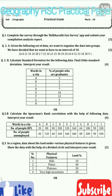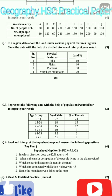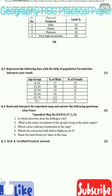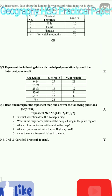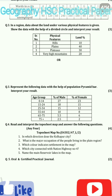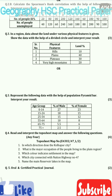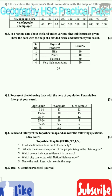Ab question 3 ki taraf aayenge. Question 3 mein aapko do sections hai — A aur B. Ek toh aapko pie chart draw karna hai, jise aap divided circles bhi bulate ho, ya phir aapko population pyramid draw karna hai. Dono mein se whatever is comfortable, that you can draw. It carries total 3 marks.